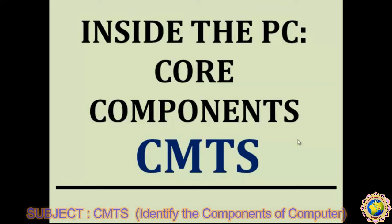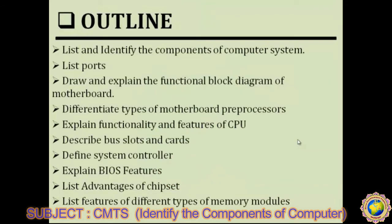In this unit we are going to cover these topics: first, list and identify the components of the computer system; second, list of ports; third, functional block diagram of motherboard; fourth, motherboard processor; fifth, functionality and features of the CPU; then bus slots and cards, system controller, BIOS features, advantages of chipsets, and features of different types of memory modules.